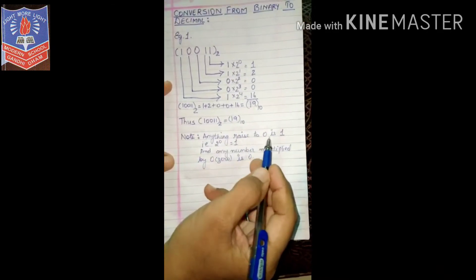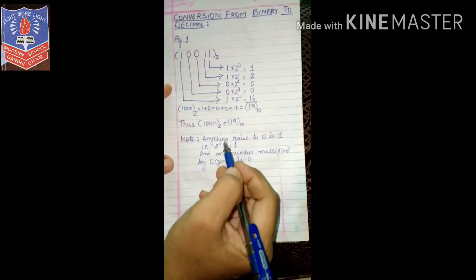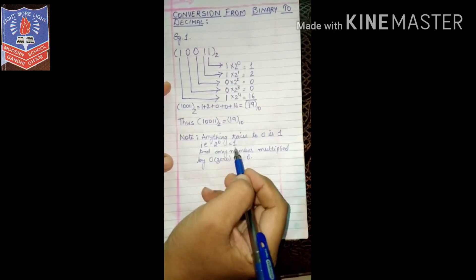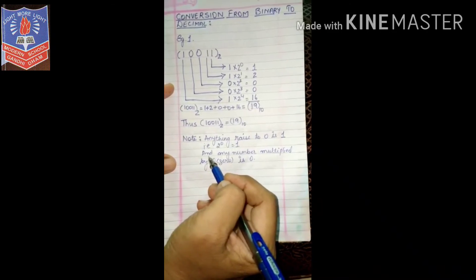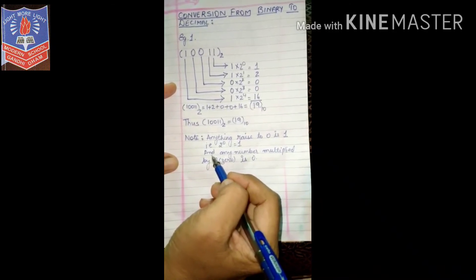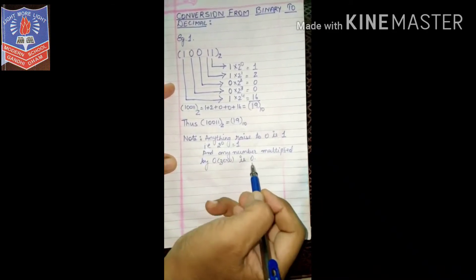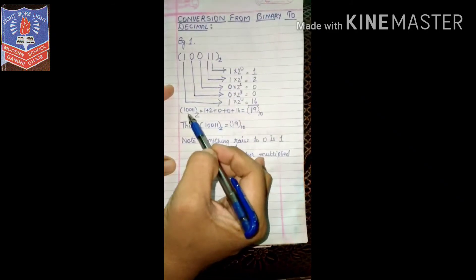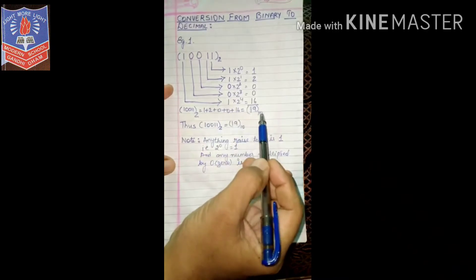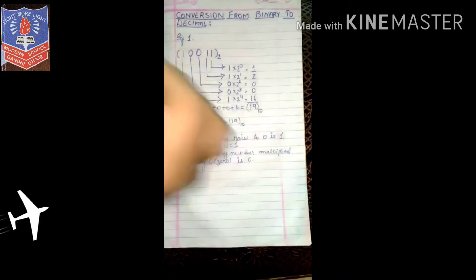Important notes: anything raise to 0 is 1, so 2 raise to 0 gives you 1. Also, any number multiplied by 0 gives you 0. This way you get the answer that 10011 binary is 19 in decimal.